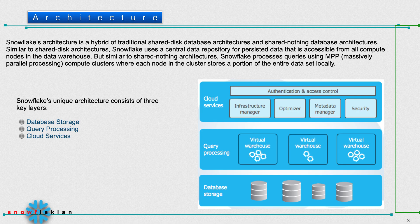Similar to shared-nothing architecture, each virtual warehouse stores a local copy of a portion of the entire data within itself. By this way it can serve the end user by processing queries much faster. The entire dataset will be stored in each virtual warehouse, so it will have a duplicate copy of data in its own virtual warehouse.